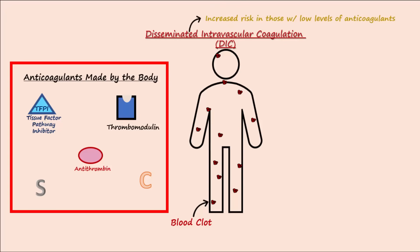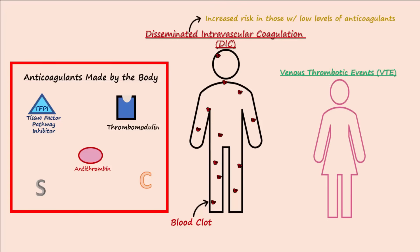Venous thrombotic events like deep vein thrombosis, abbreviated DVT, and pulmonary embolism, abbreviated PE, are also more likely to occur in individuals who express reduced levels of these anticoagulants.